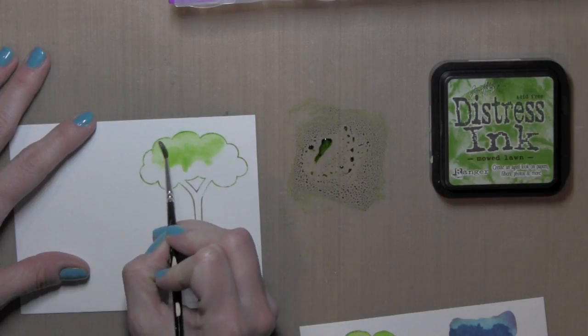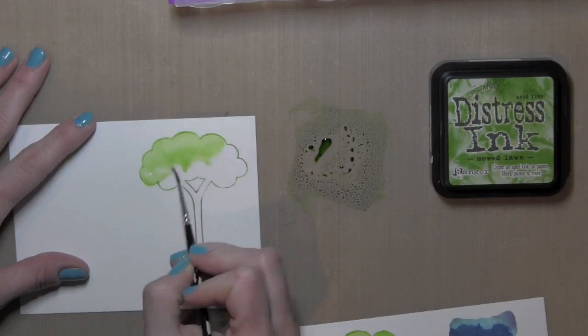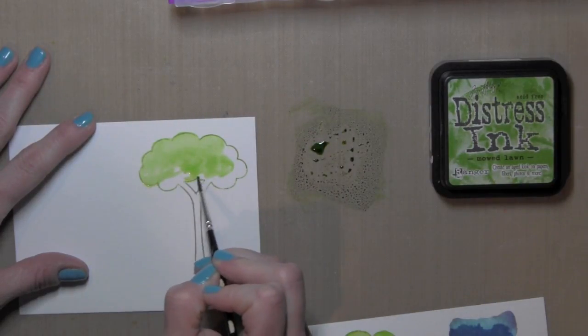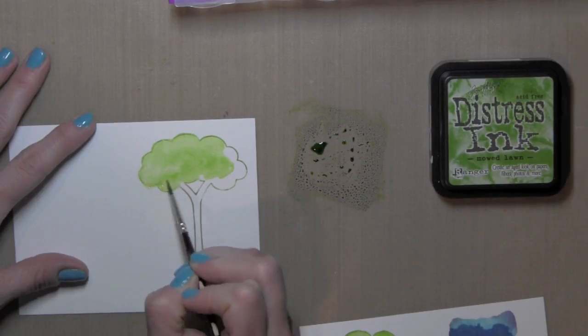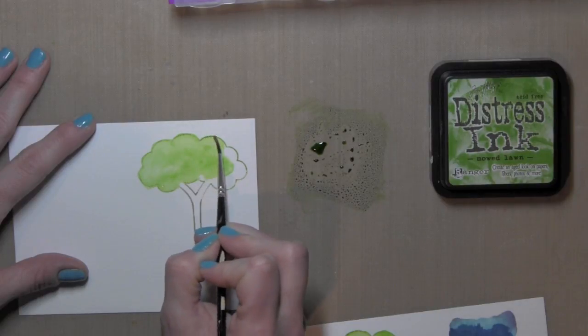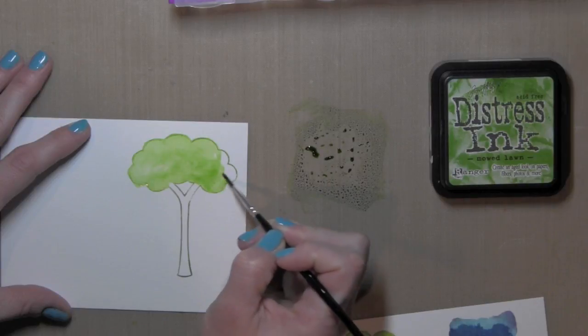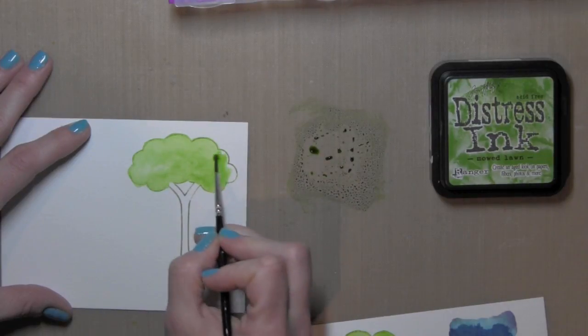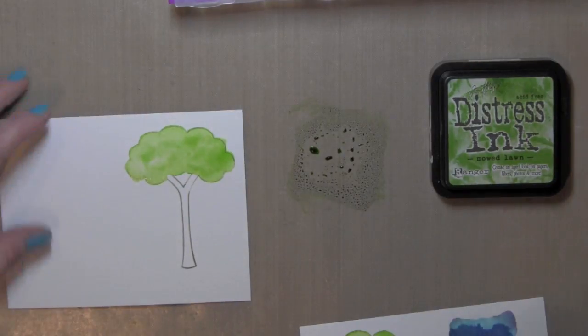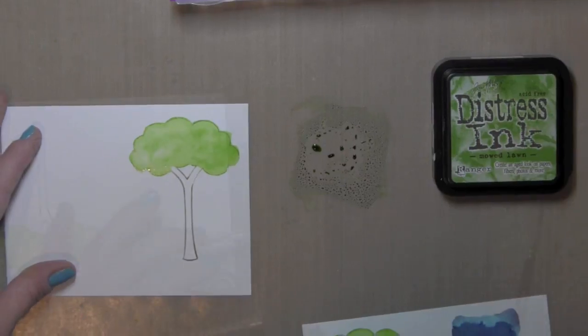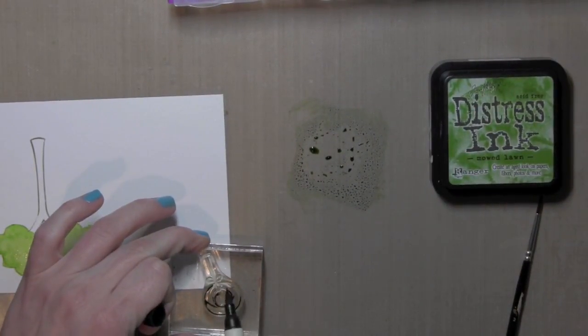So what I did was use some distress markers in mowed lawn and I think it was frayed burlap on the stamp, outlining the tree trunk with the frayed burlap and then the top with the mowed lawn distress marker. And then I'm filling in those areas with a damp, pretty wet paintbrush for the top of the tree and just filling that in,